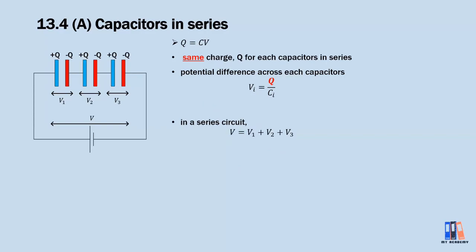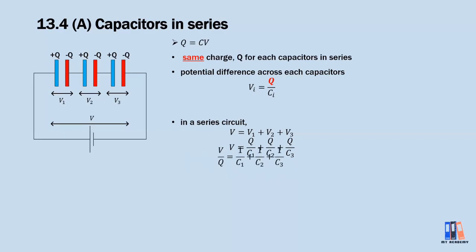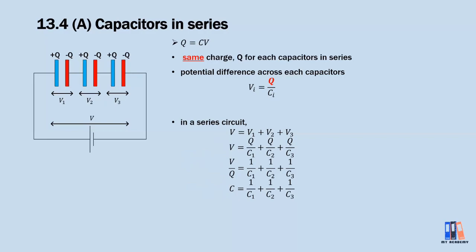We start with the formula V = V₁ + V₂ + V₃, and then substitute all the formulas for V. Then we divide the equation by Q, and we get the effective capacitance of capacitors in series: 1/C_eff = 1/C₁ + 1/C₂ + 1/C₃.